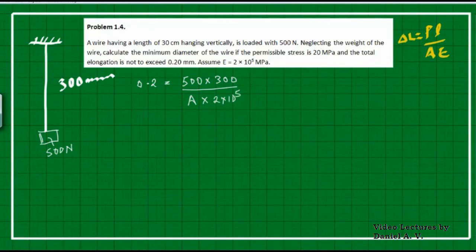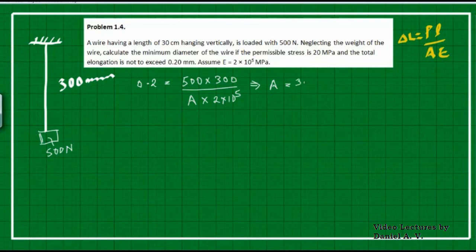Doing this calculation, we get the cross-sectional area as 3.75 mm square. So that's the area we obtain from the elongation constraint.